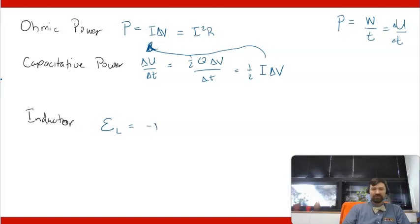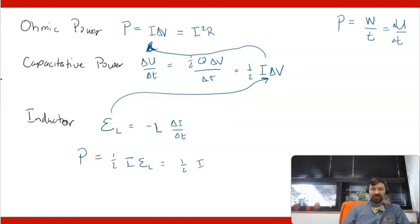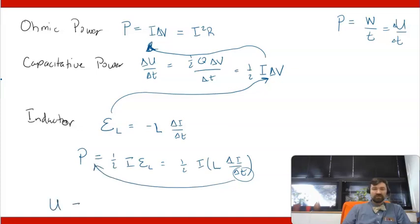For an inductor, the EMF induced is negative L times Delta I over Delta T, and that is the equivalent of the Delta V term. So if we want to compute power for the inductor, we expect power to look like one-half I times L times Delta I over Delta T.